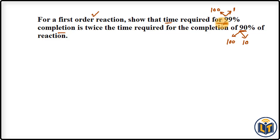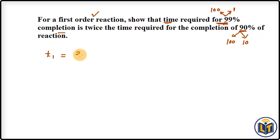We now apply the first-order reaction formula for both reactions and divide the times. For the reaction completed by 99%, we call the time T1. Using the first-order formula: T1 = (2.303 / K) × log(100 / 1).